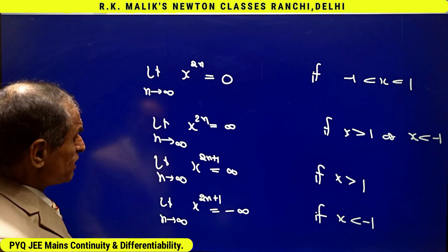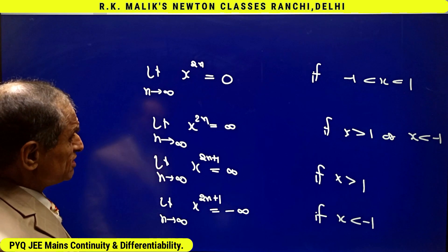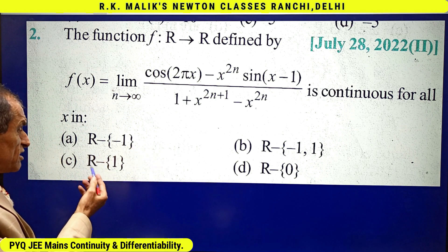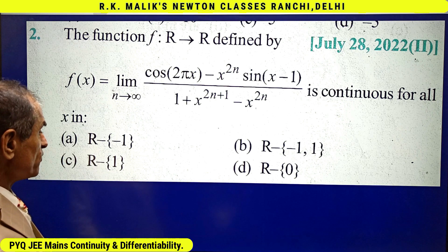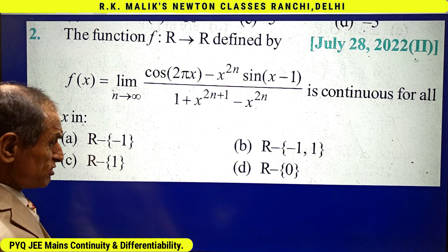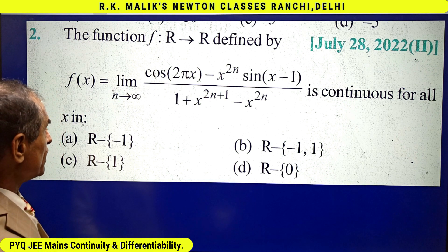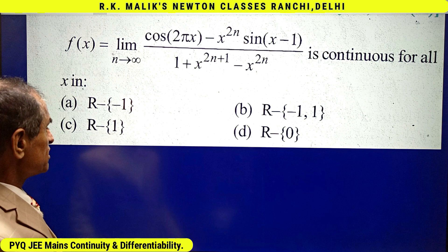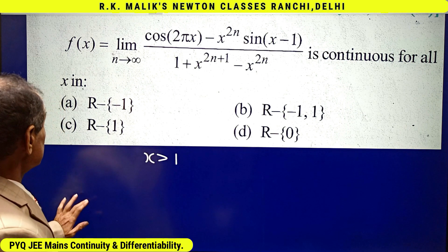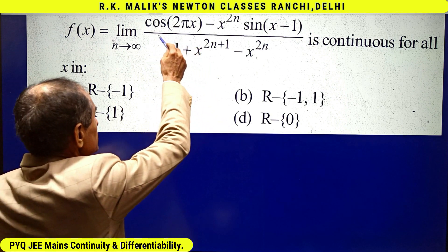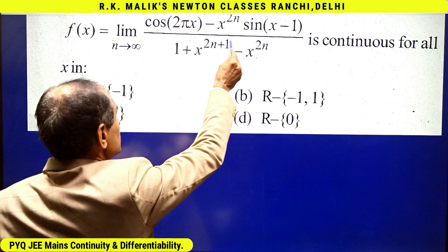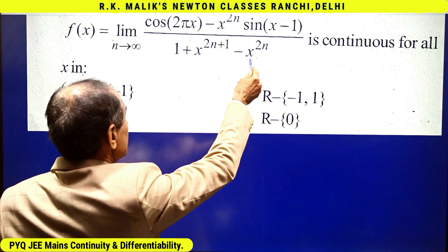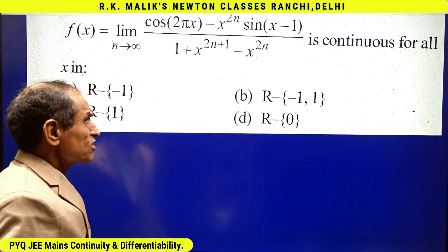Keeping all these facts in mind, the situation changes only at x = 1 and x = minus 1. From the answer choices, the doubtful points are minus 1, 1, and 0 — since 0 also appears in the choices. Therefore I will discuss the function only at x = 1, x = minus 1, and x = 0. First, let us discuss the case when x is greater than 1.